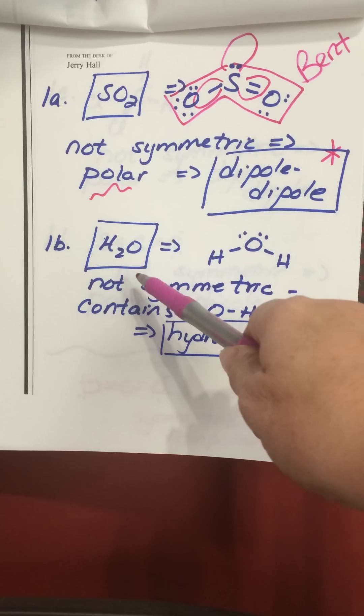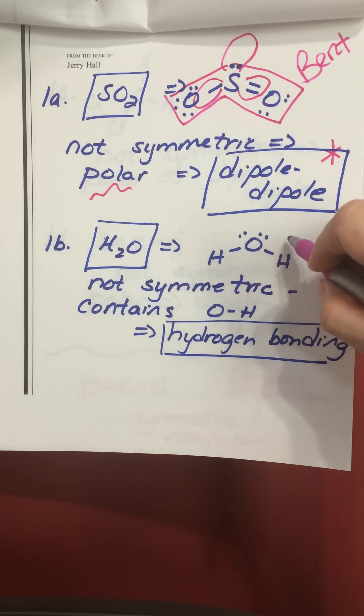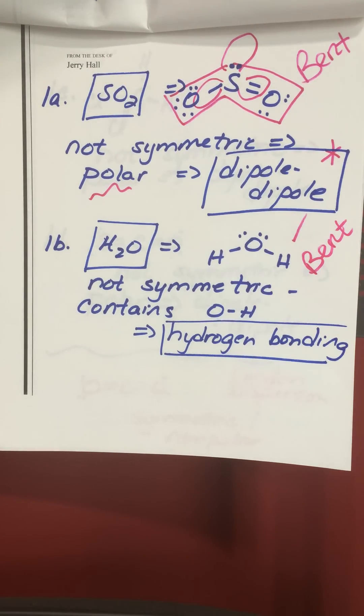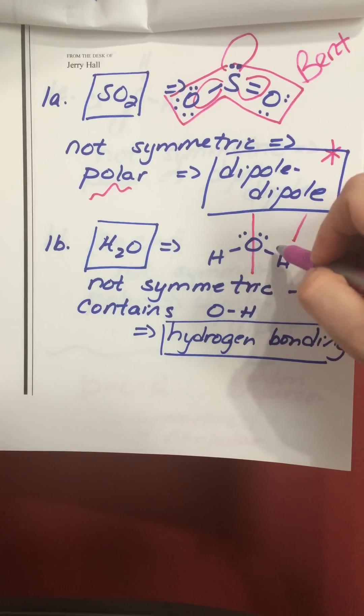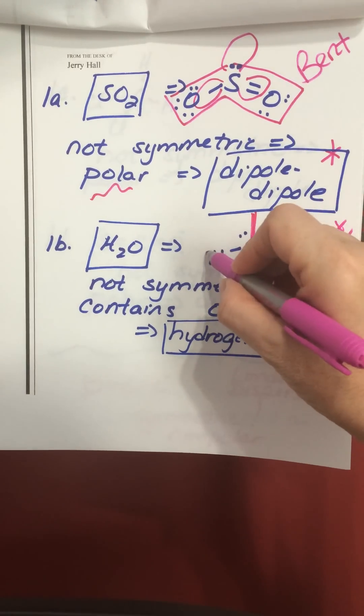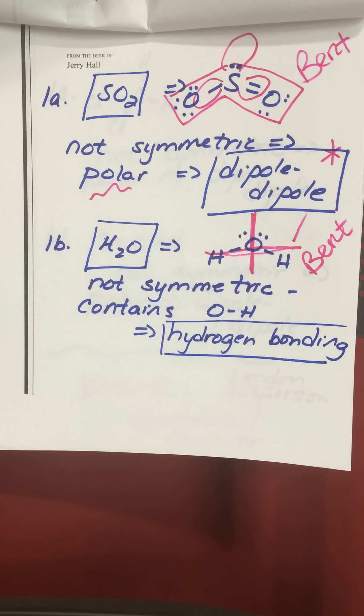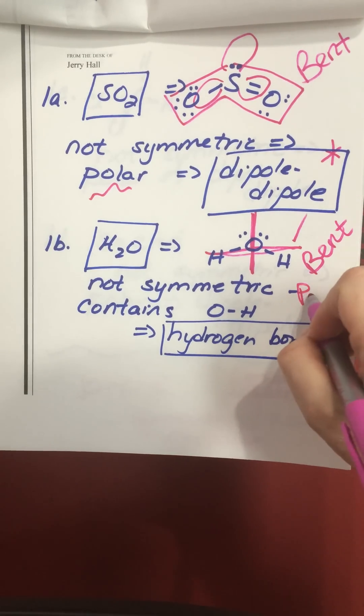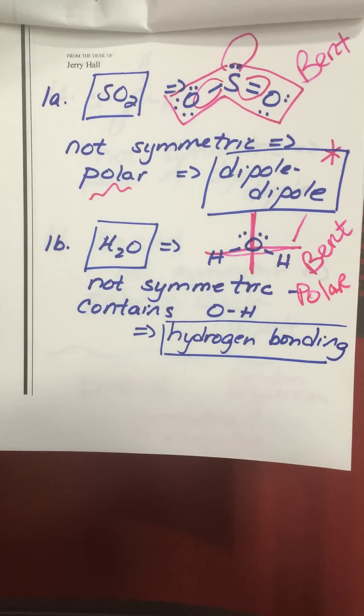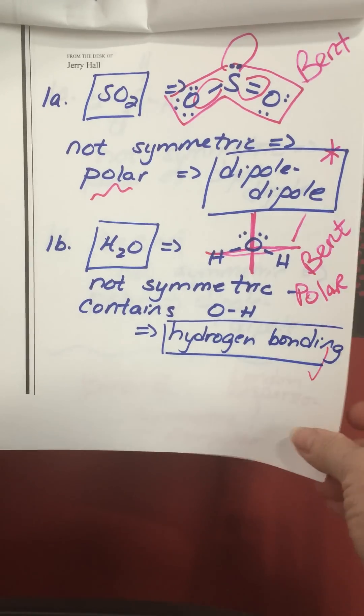Water has a Lewis structure that looks like this. Its molecular shape is also bent. Anytime you have a bent structure, it is not symmetrical. If you drew a plane across the middle, it doesn't look the same top and bottom. It has to be symmetric from all angles and planes in order to be considered totally symmetric. Water is not symmetric, so it's polar. And it also contains the possibility for hydrogen bonding, it has an oxygen directly bonded to a hydrogen. So the main intermolecular force for water is hydrogen bonding.